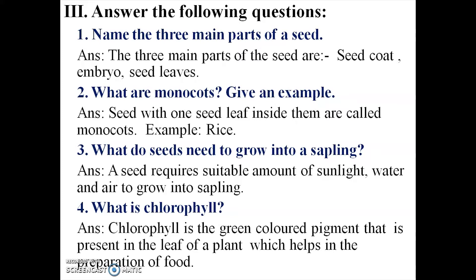Most plants are green in color. The green color of leaves comes from the pigment called chlorophyll. It is present in the leaf of a plant which helps in the preparation of food, and it helps in the process of photosynthesis. Chlorophyll is very important for photosynthesis.